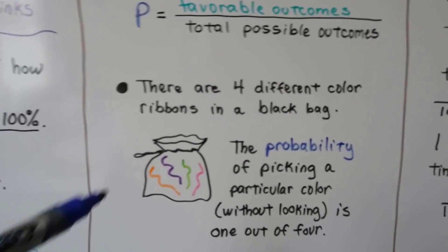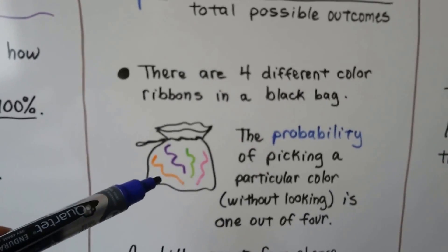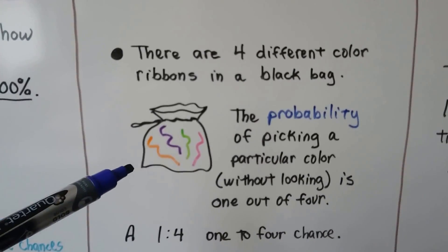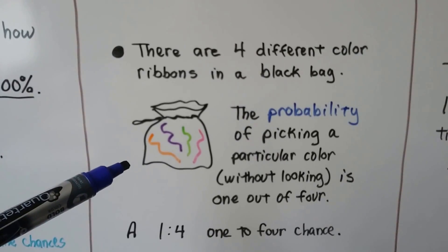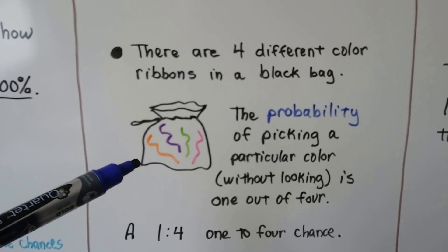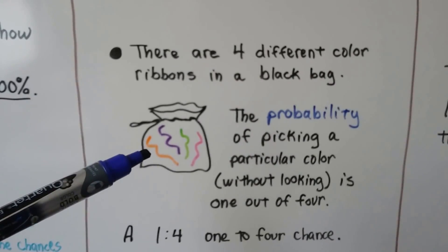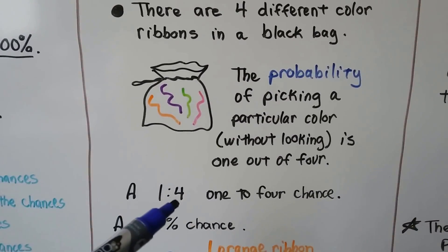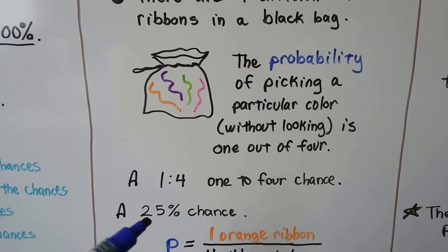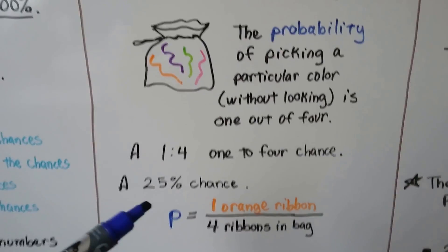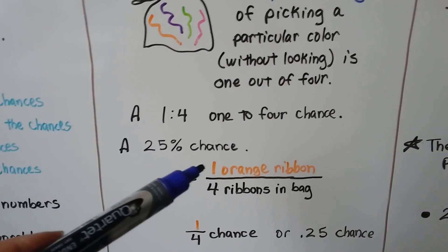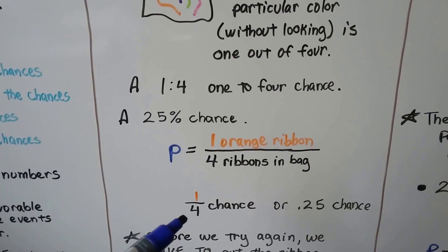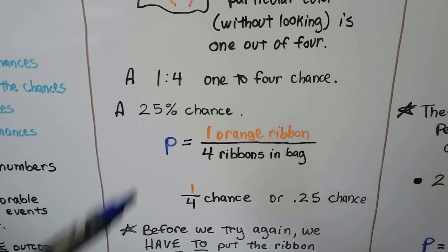So take a look at this bag. Let's pretend this is a black bag. There's four different color ribbons in this black bag we can't see inside of it. The probability of picking a particular color without looking is one out of four. There's four ribbons of different color. If we want to pick an orange one, we've got a one out of four chance of picking it. That would be a one to four chance. It would be a 25% chance of picking an orange one. Our probability would be one orange ribbon out of four ribbons in the bag. It's a one-fourth chance or .25 chance, 25%.